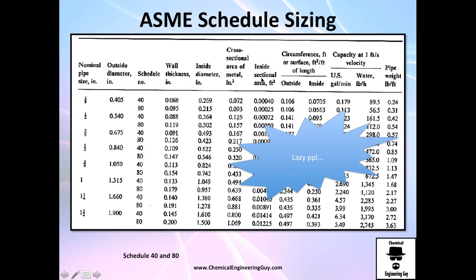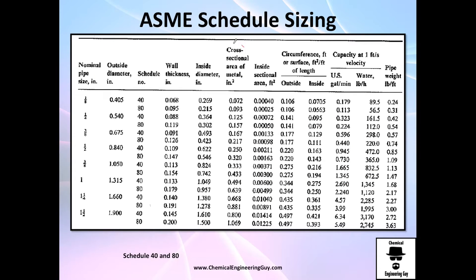This extra data in the table is for lazy people — you don't need it, you just need the left side. The cross-sectional area is simply π/4 times the interior diameter squared. In an Excel sheet, you'd compute π/4 and square the inside diameter value. There's also outside diameter in feet, inside diameter in inches, and the circumference — which is just π times the diameter for both inside and outside.